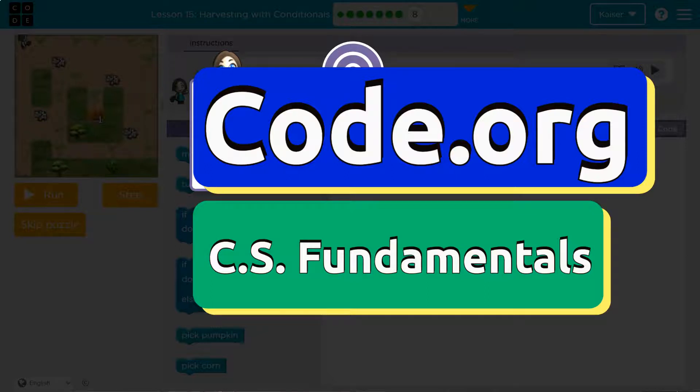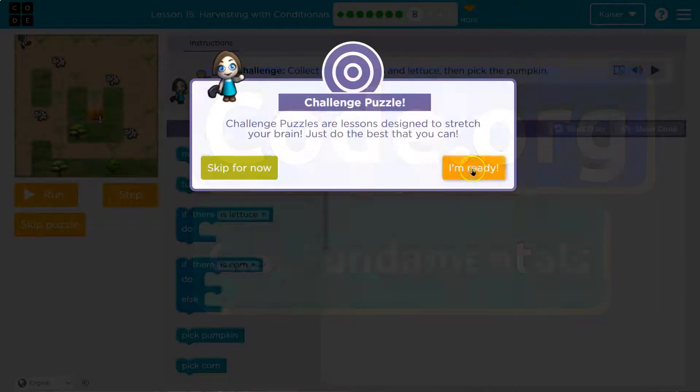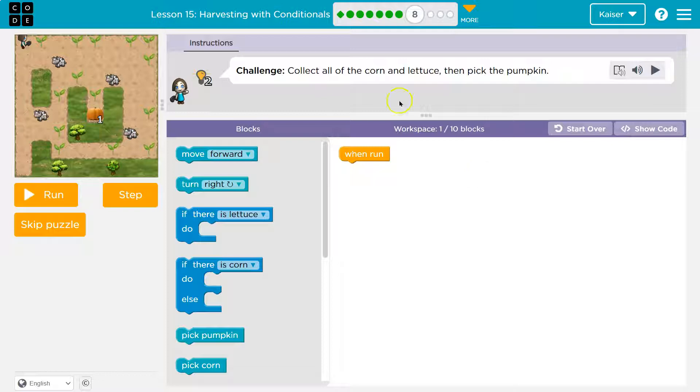This is code.org. Challenge puzzle. Love these. I'm ready. We are ready. Challenge. Collect all of the corn and lettuce, then pick the pumpkin. Ooh, and we got cows.